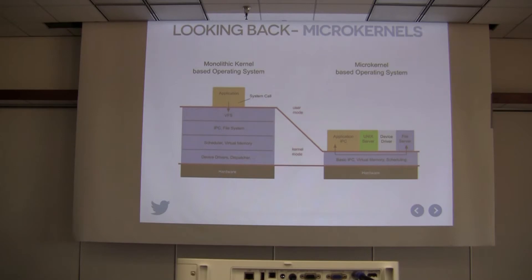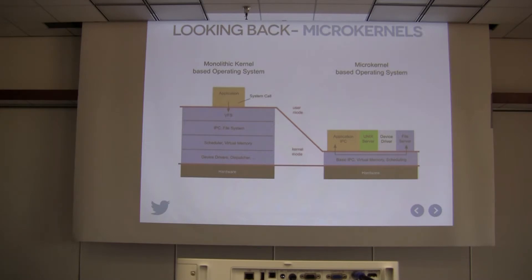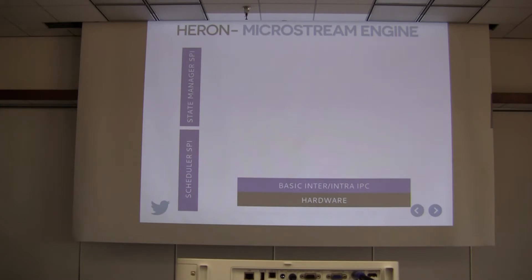We looked back at computer design history — infrastructure-related architectures revisit every 20 to 30 years. We drew inspiration from microkernels, like the Mach system from CMU. The idea was: the kernel is too massive, so keep only the core — the basic IPC layer and scheduling — and push the rest out to the application layer. We borrowed this idea and created what we call a microstream engine, where Heron is completely composable — you can replace any component at any time.